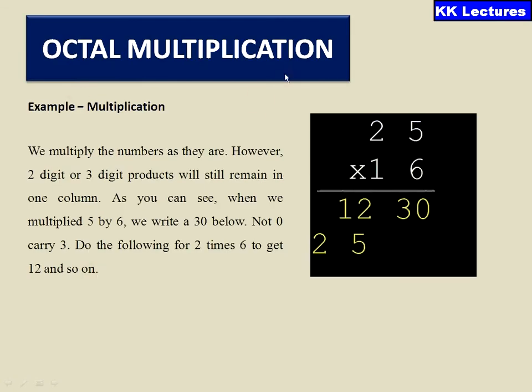Now coming to the octal multiplication. Whenever I want to perform the octal multiplication, what is the procedure I follow? Generally in the decimal number system, whenever I get a 2 digit I will write 1 digit here and the other will be going as a carry. But when it is coming to the octal multiplication, simply whatever the numbers I have, I will multiply and without giving a carry, I will write it here itself.